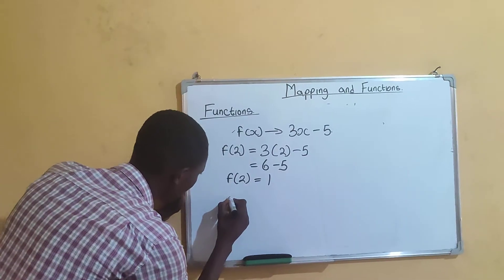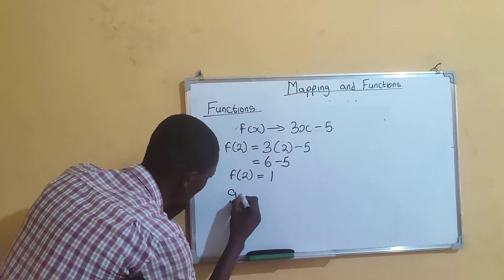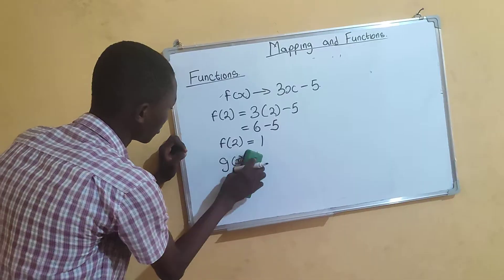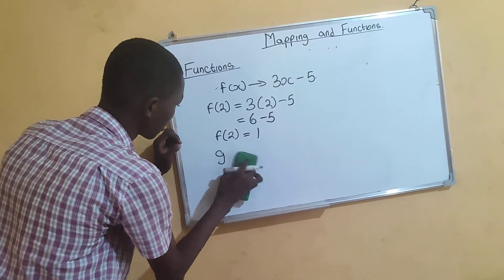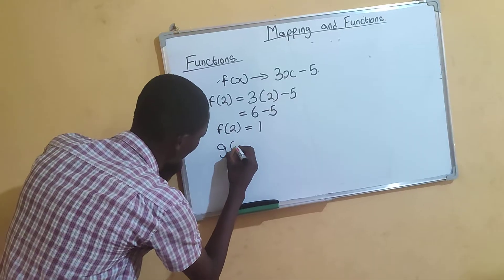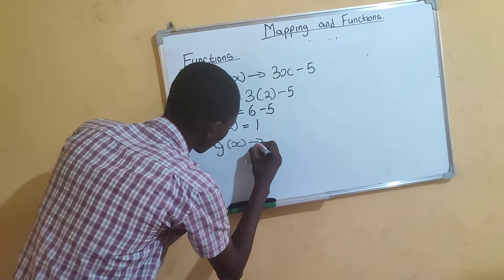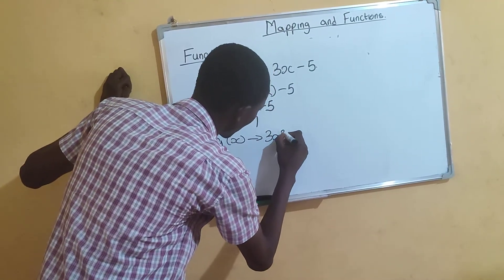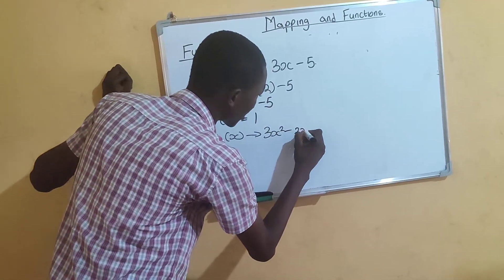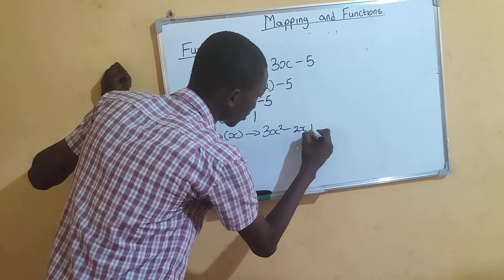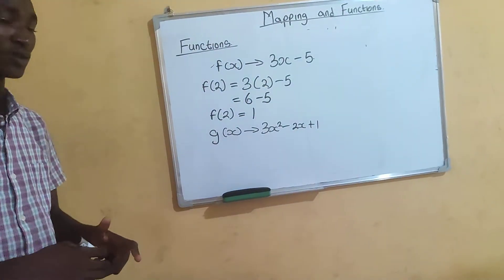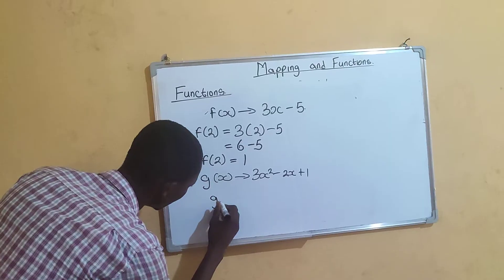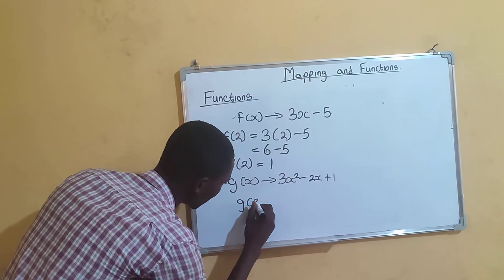Now let's take a quadratic function example. g(x) = 3x² − 2x + 1. We have to find g(3).